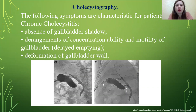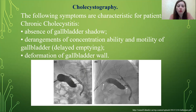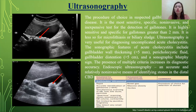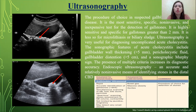Cholecystography: the following symptoms are characteristic for patients with chronic cholecystitis — absence of gallbladder shadow, derangement of concentration ability and motility of the gallbladder, and deformation of the gallbladder wall. Ultrasonography is the procedure of choice for suspected gallbladder disease. It is a more sensitive, specific, non-invasive, and inexpensive test for the detection of gallstones, highly sensitive and specific for gallstones greater than 2 mm, though less sensitive for microlithiasis or biliary sludge.